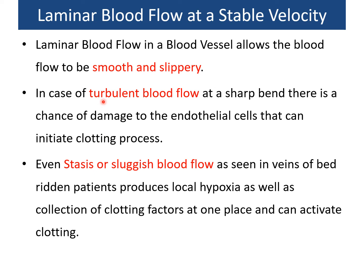Opposed to turbulent flow is stasis or sluggish blood flow, as seen in the veins of bedridden patients when something presses on a blood vessel from outside. This produces stasis of blood flow and causes local hypoxia. The blood stays in place, loses oxygen, and clotting factors accumulate locally — they can be activated by hypoxia, causing clotting.